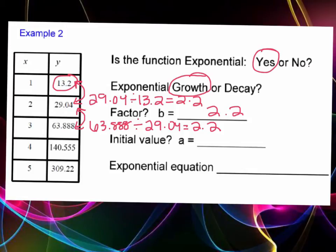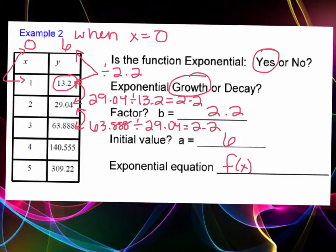Now what is our initial value A when X equals 0? We need to go backwards. We're going to divide 13.2 by 2.2 to get 6, and this X value would be 0. We had to work backwards. Notice if I divide each value by 2.2 to get all these values, then dividing 13.2 by 2.2 gives 6. This only took us one time to go back to the zeroth term, but you may have to do this several times. Now we can write our exponential equation: f(x) equals 6 times 2.2 to the x power.